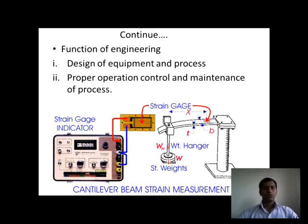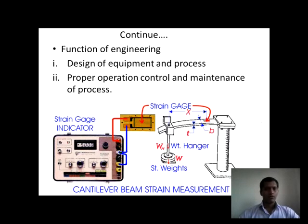The function or role of mechanical engineering in mechanical measurement: the first one is design of equipment and process, and the second is proper operation, control, and maintenance. Design can serve many things — we have to make our equipment safe, as it can break while operating. Second, proper operation, control, and maintenance: we have to maintain and perform this operation correctly and neatly.